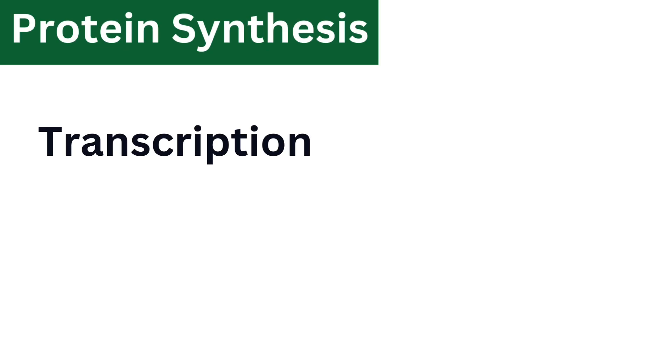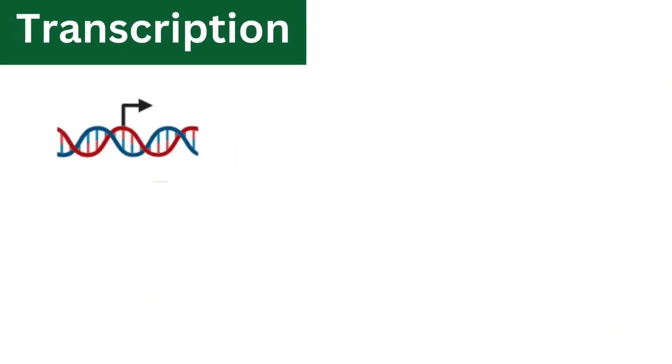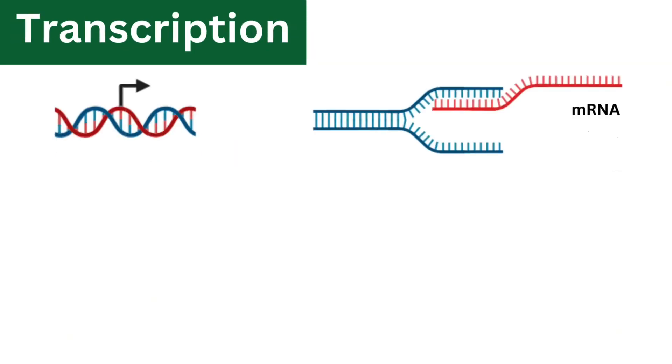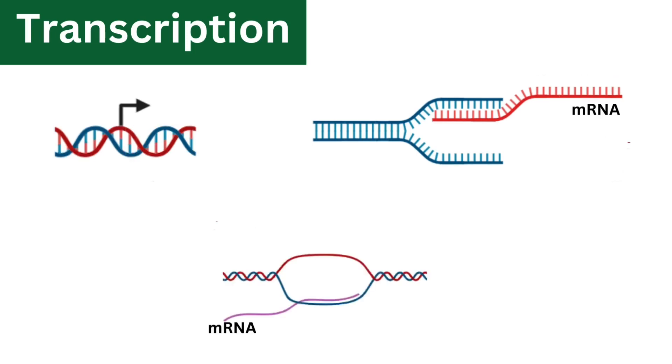Protein synthesis occurs in two main stages. The first stage is transcription, where the DNA unwinds and genetic information stored in DNA is copied into messenger RNA or mRNA. Then the mRNA is transported out of the nucleus onto ribosomes, where the translation of protein occurs.